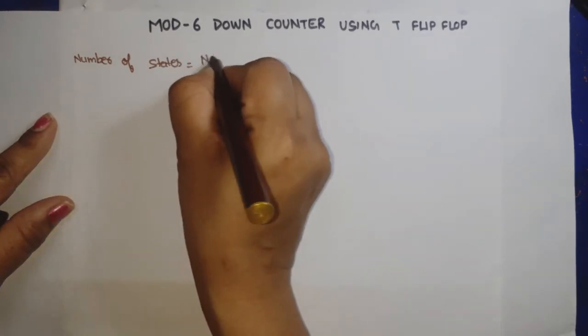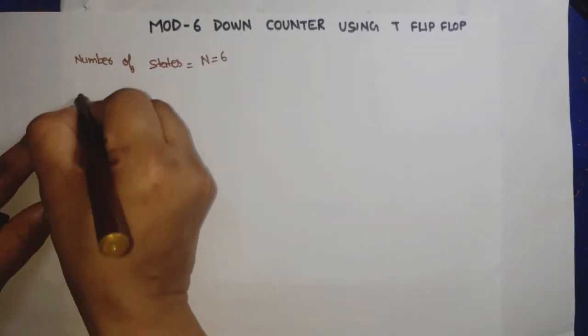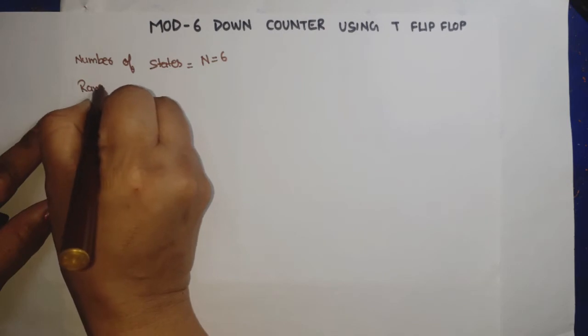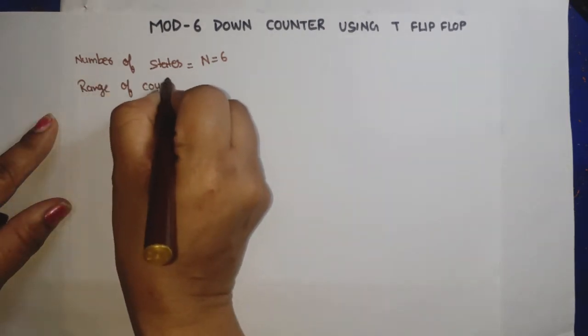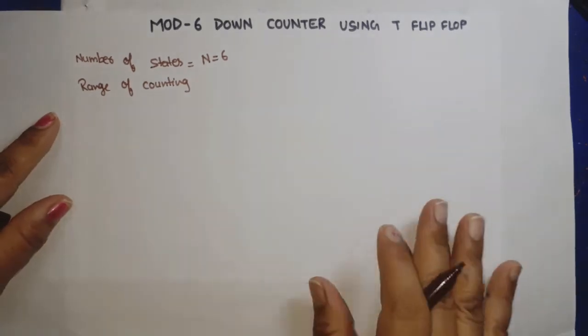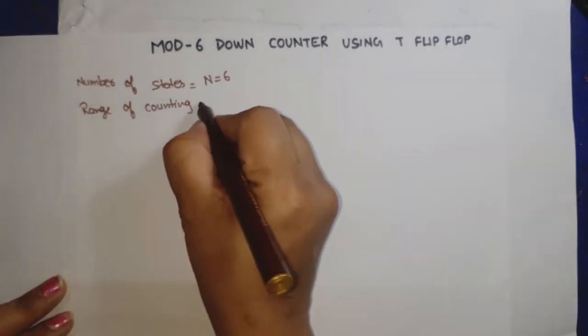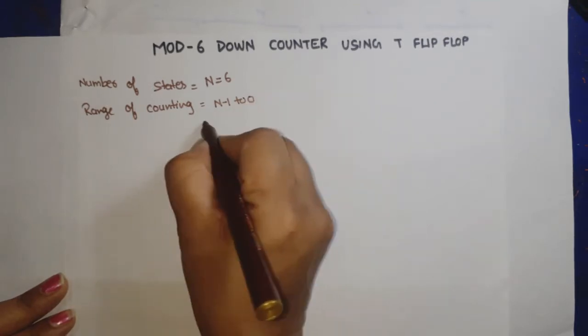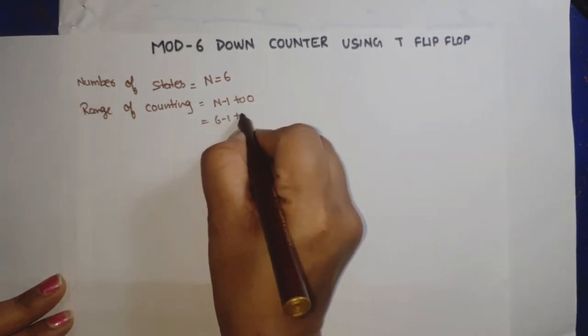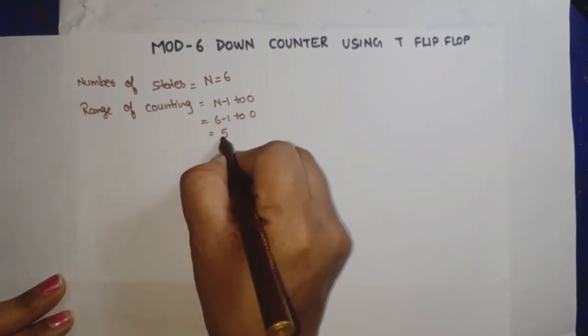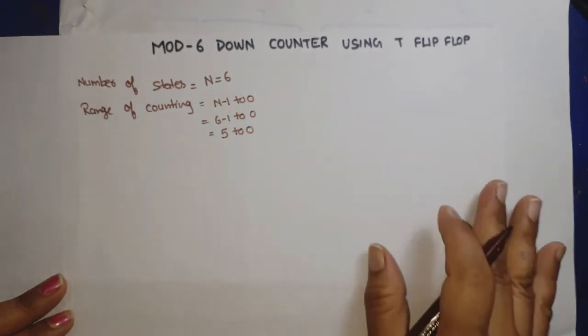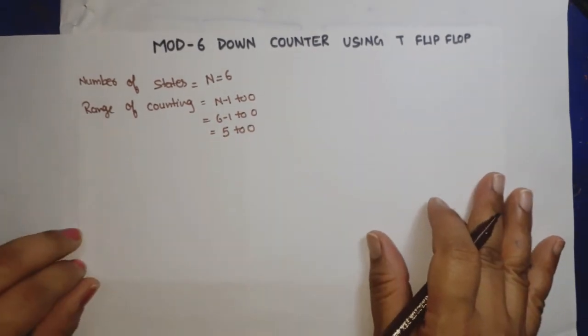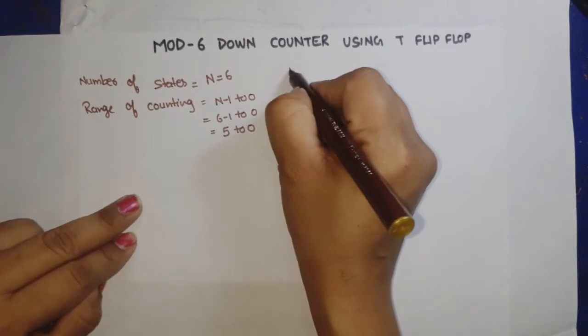Now what is the range of counting? This is a down counter, so the range will start from N-1 to 0, meaning 6-1 to 0, so it will count from 5 to 0.